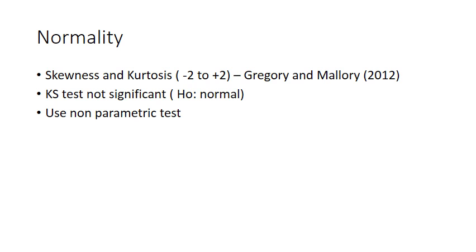First off we have to check for normality. Normality is pretty simple. We need to check for skewness and kurtosis, making sure that it's between negative 2 and plus 2 as mentioned by Gregory and Mallory. We need to make sure that KS test is not significant to make sure that it stays normal.